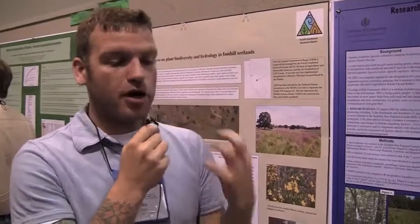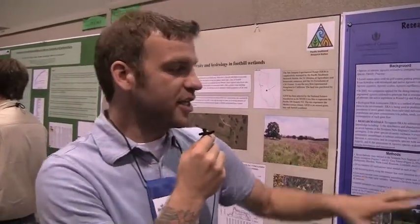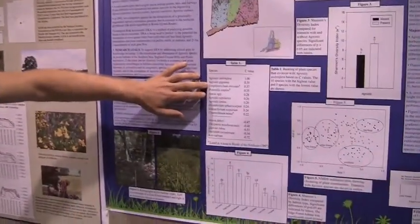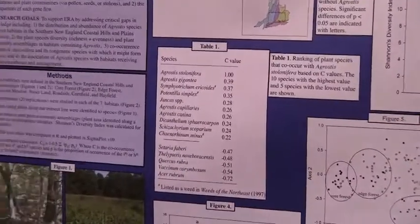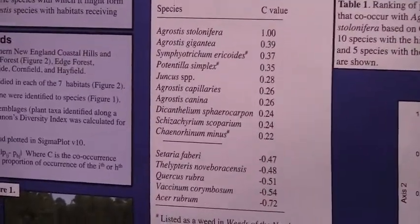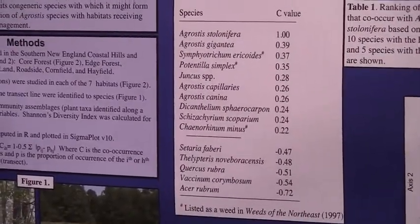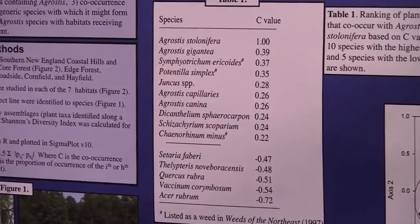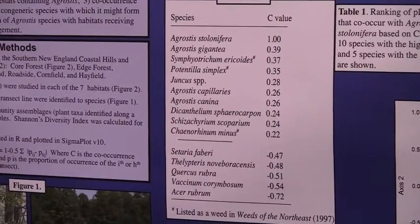We also found that Agrostis species co-occur with each other, which you can see in this table. Agrostis gigantea and Agrostis stolonifera are very highly co-occurring. So we're concerned about gene flow between Agrostis stolonifera and its common relatives because they co-occur so readily across the ecoregion in Connecticut.